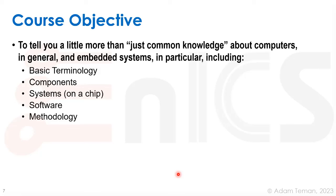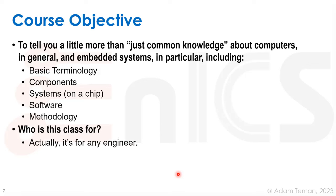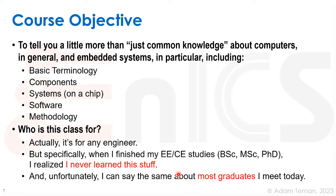The objectives of this course are to tell you a little more than just common knowledge about computers in general and embedded systems in particular. This includes basic terminology, components of computers and embedded systems, what a system on a chip is, a bit about software, and a bit about methodology. This class is really for any engineer. When I finished my electrical and computer engineering studies, I realized that no one ever taught me this stuff. Most graduates I meet today, including students who come to do their master's or PhD with me, don't know a lot of these things unless they learned it on the job in industry. Therefore, I put together this course to introduce you to a lot of these concepts — not in deep detail, but a lot more than what you'd get from basic popular content on the internet.